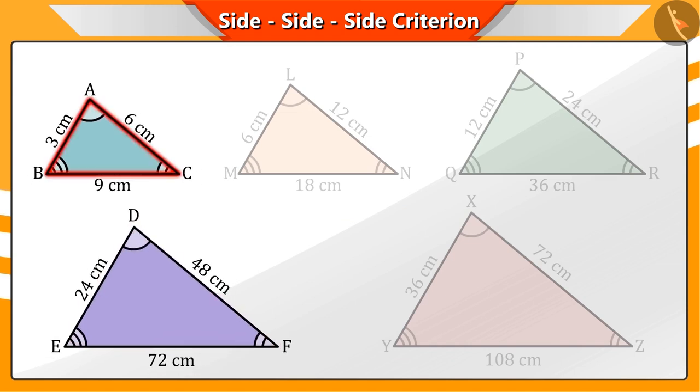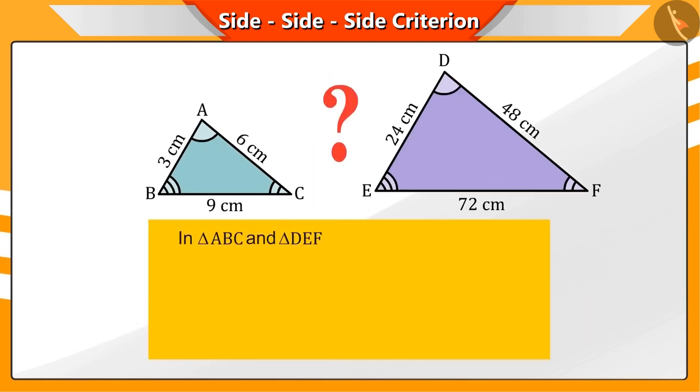Can you tell if triangles ABC and DEF are similar?